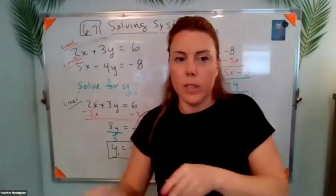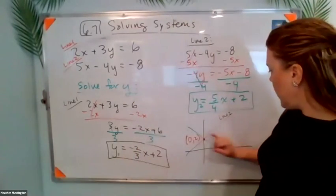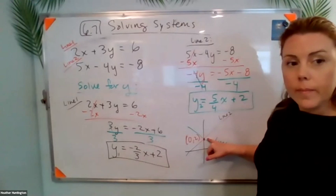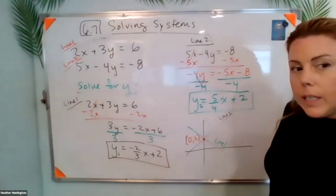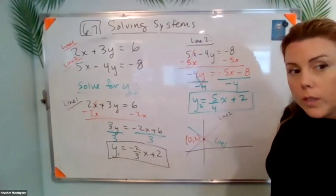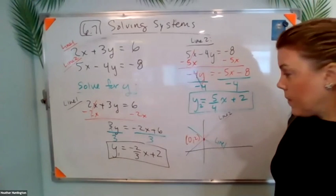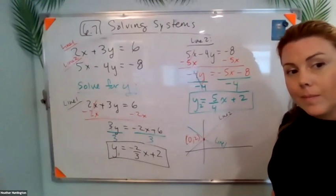What does it mean graphically if there's not a solution? Like here we got a solution. What would it mean if there's no solution? If the two lines don't intersect.